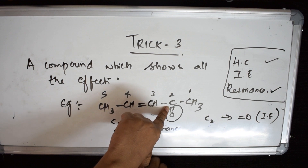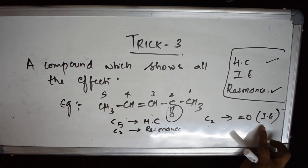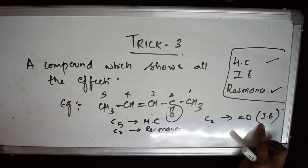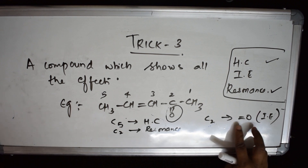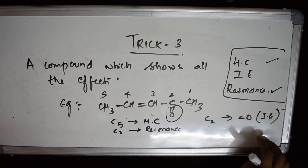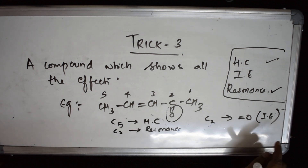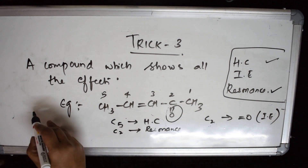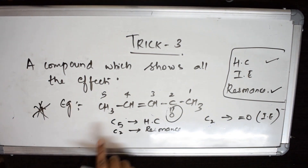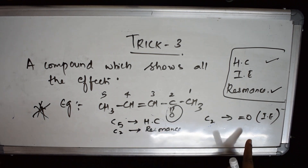So for the inductive effect: what is it? It is polarization of the sigma bond due to an electron withdrawing or releasing group. Please go to the inductive effect video for plus I and minus I effects. Remember this compound — it is a very important question. The compound which shows all three effects — hyper conjugation, resonance, and inductive effect — is CH₃-CH=CH-C(=O)-OCH₃.